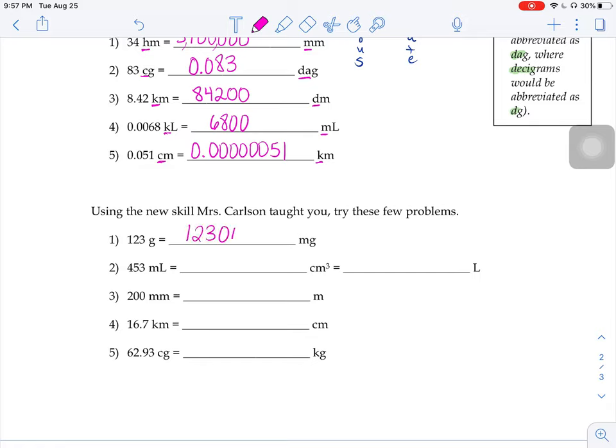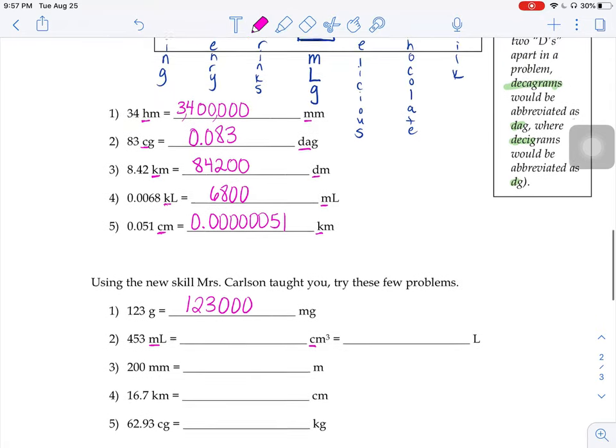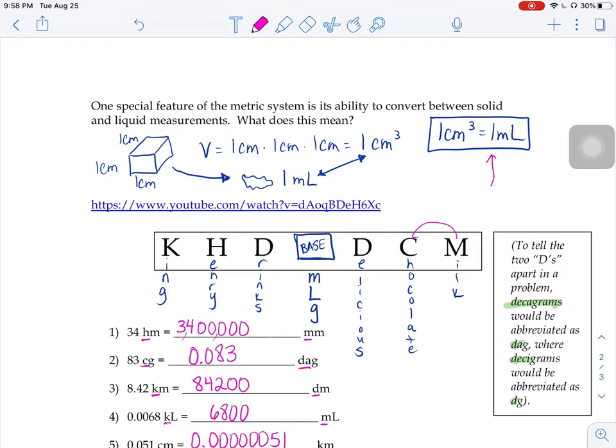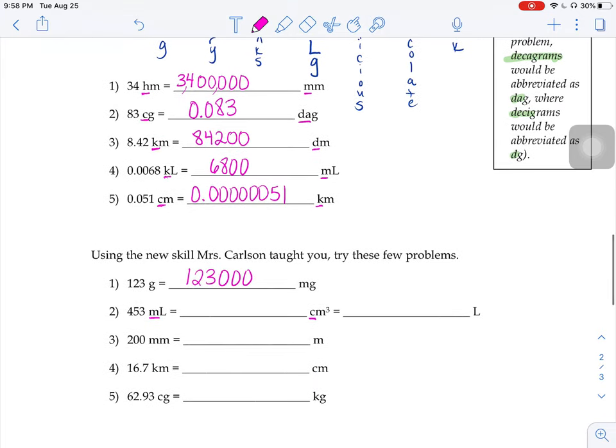If you've done these right, this top guy would be 123,000. This next one's tricky. A lot of people look at milliliters and centimeters cubed and they think, oh, that means I have to slide my decimal over one spot to the left to get from the M to the C. But remember up above, we said right here that a cubic centimeter and a milliliter are actually the exact same thing. So if you have 453 milliliters, you have 453 cubic centimeters. They're identical.